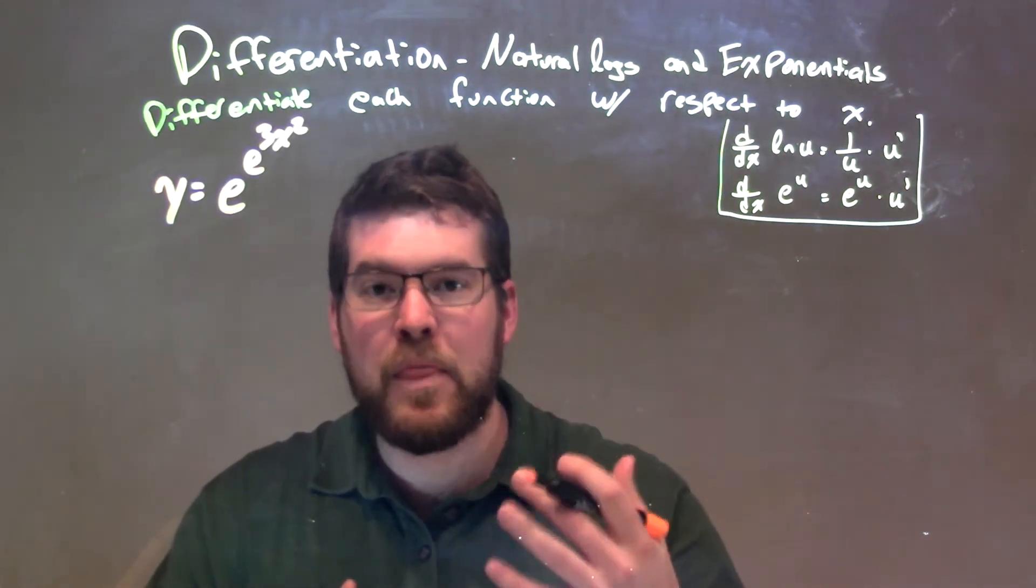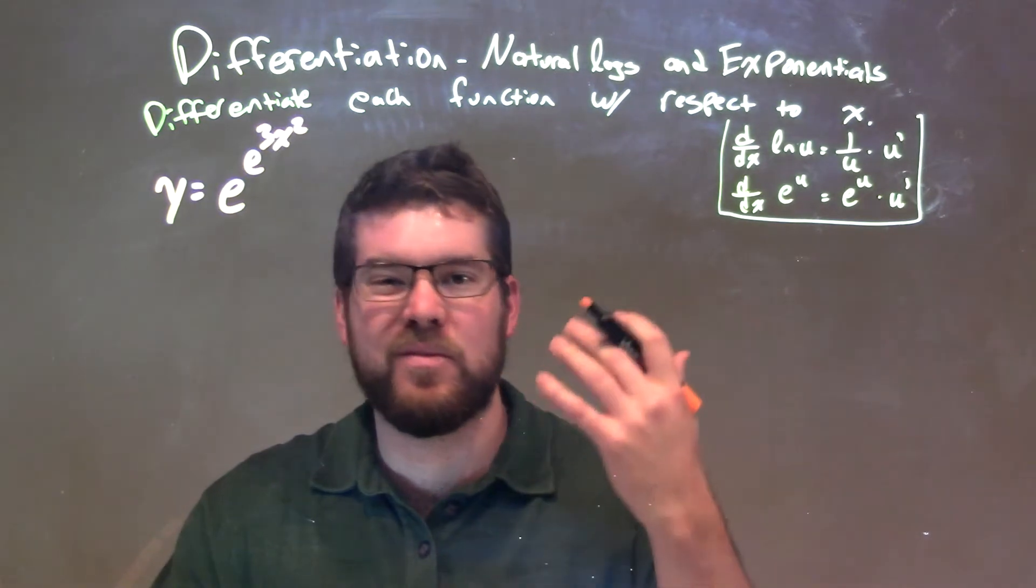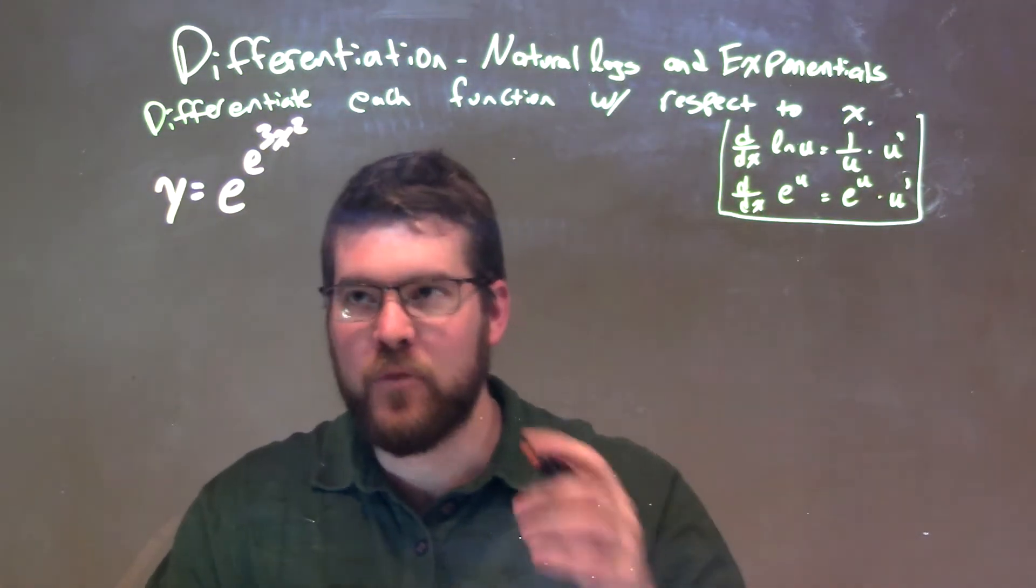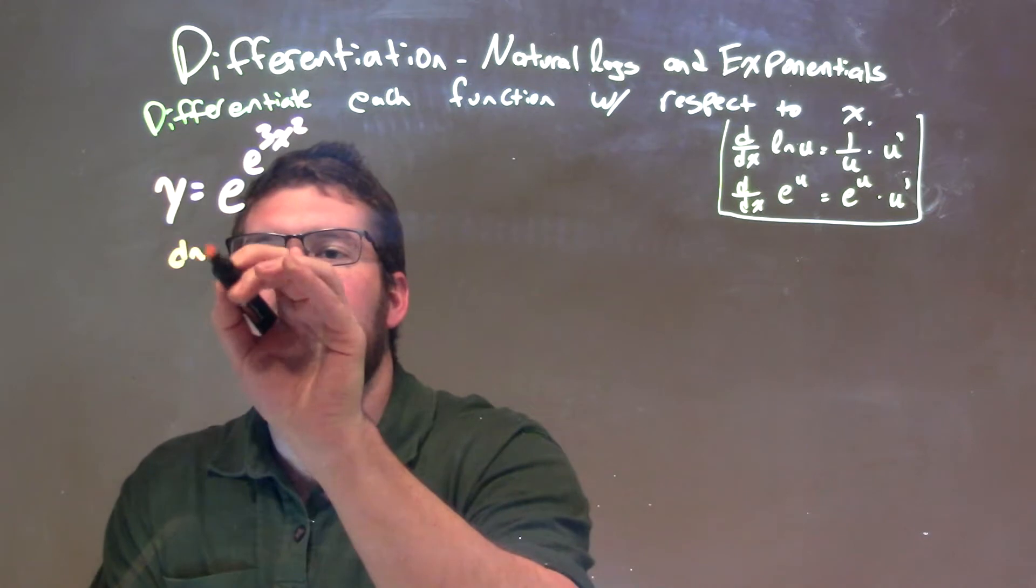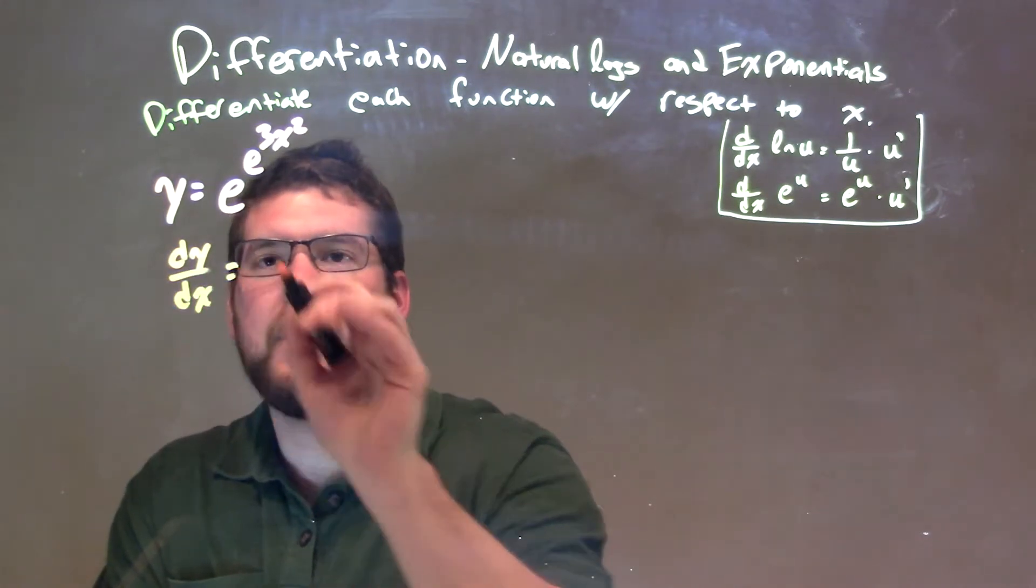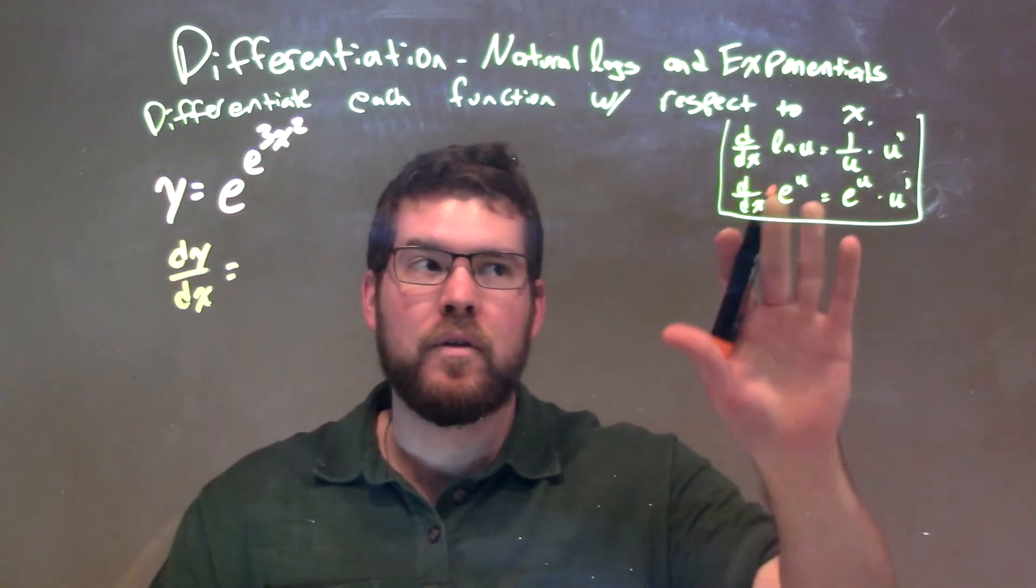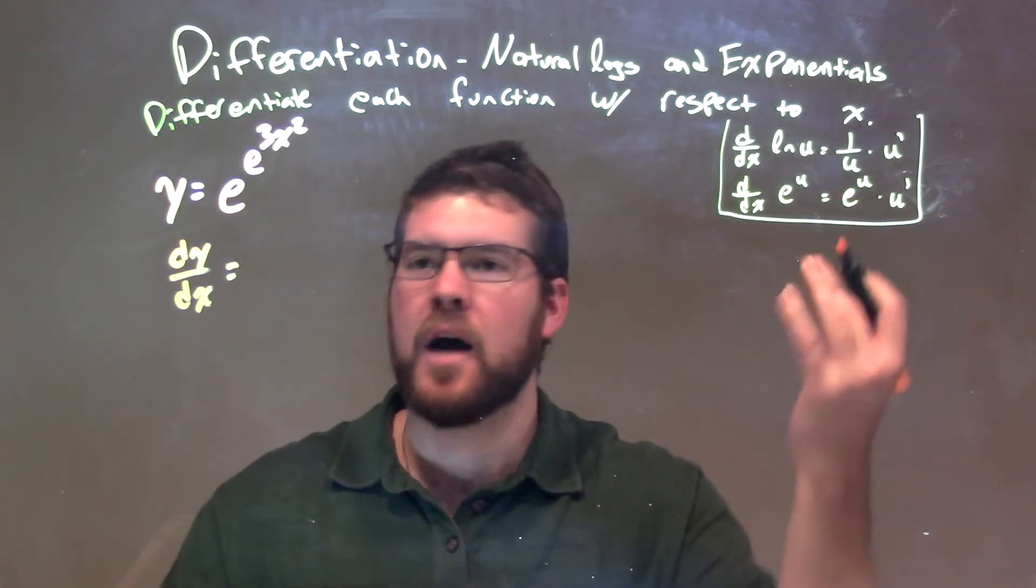We're going to use rules of e to the u as well as the chain rule. So dy/dx is equal to, well, the derivative of e to the u is e to the u times u prime.